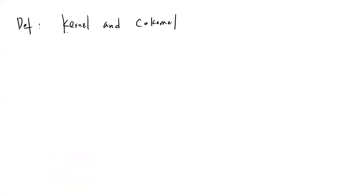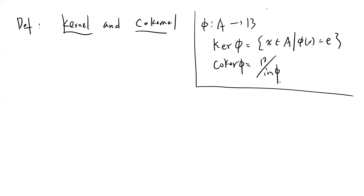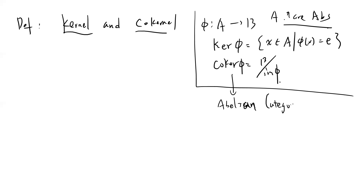In group theory, the kernel and co-kernel are well-known, especially for abelian groups. If A and B are abelian groups with map φ, the kernel of φ is {x ∈ A : φ(x) = identity}, and the co-kernel is B modulo the image of φ. Some people generalize this to so-called abelian categories, which I won't cover in this video but may in a future one.